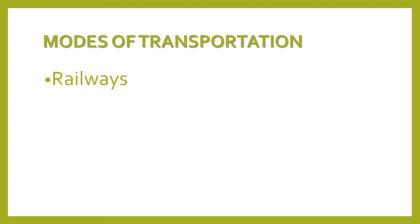Railways — railways work on land. Then there is roadways, which includes cars, trucks, bicycles, and all of these things. Which category does it come into? Yes, it comes into land travel.